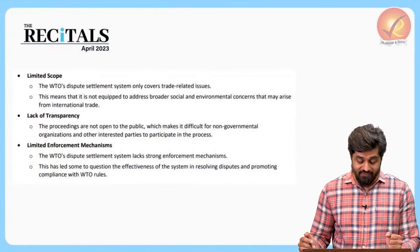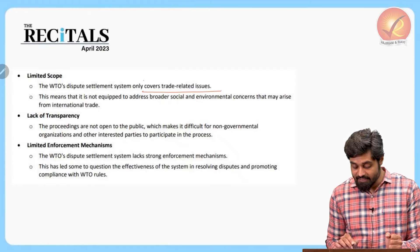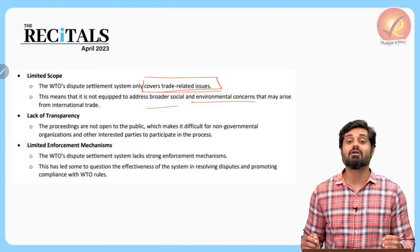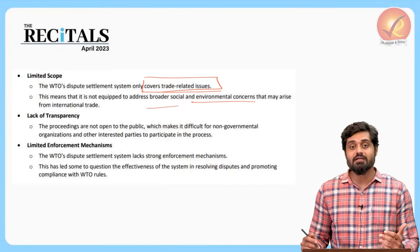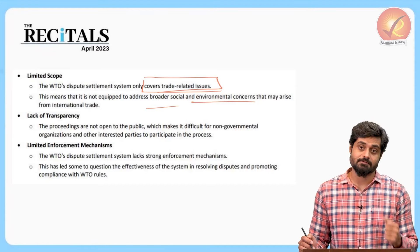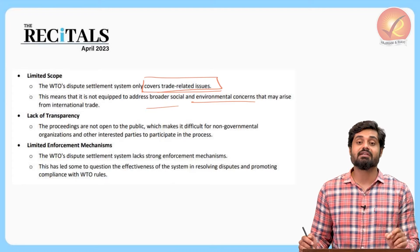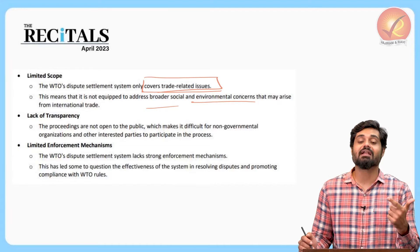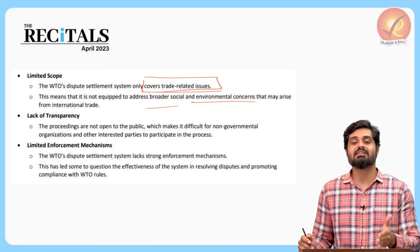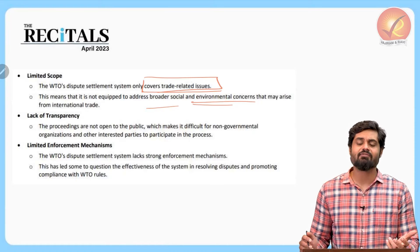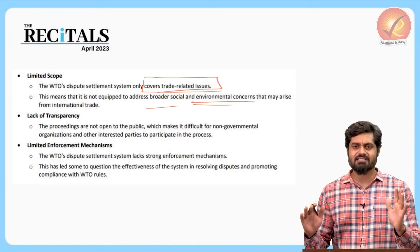Third criticism: limited scope. WTO covers only trade-related disputes; environmental concerns and social problems are not addressed. Notably, if environmental concerns were incorporated into WTO — as the western world wants — it would further disadvantage developing countries, since they lack the technical competence and financial resources to produce goods in an environmentally sound manner. So it is somewhat beneficial for India that environmental concerns remain outside WTO's scope.